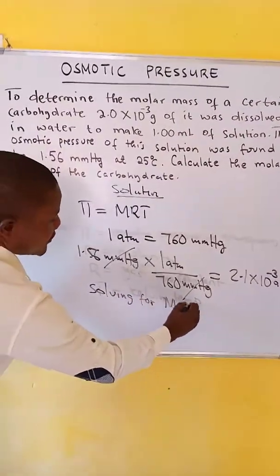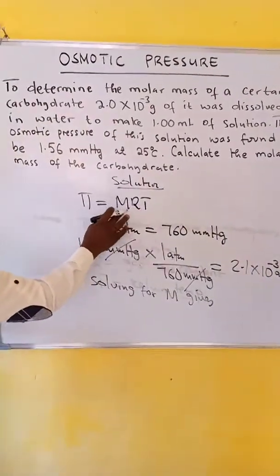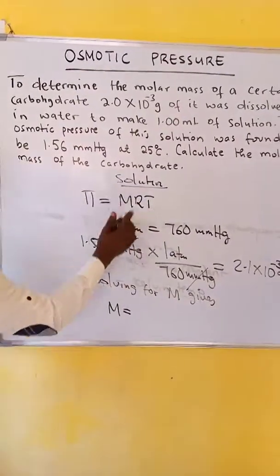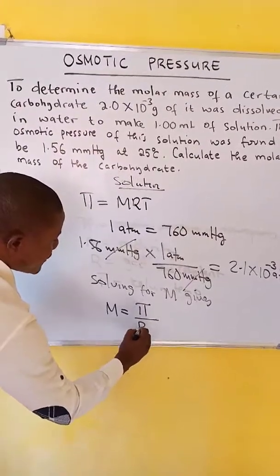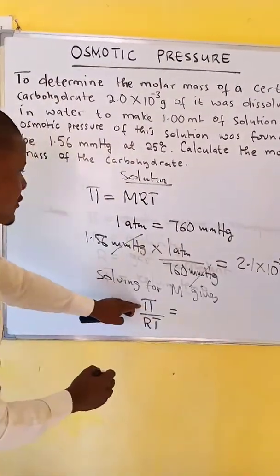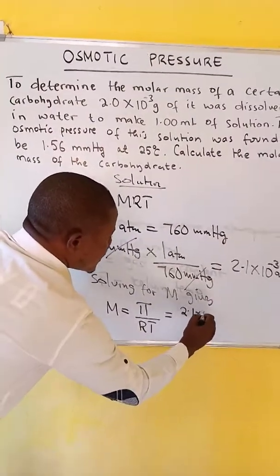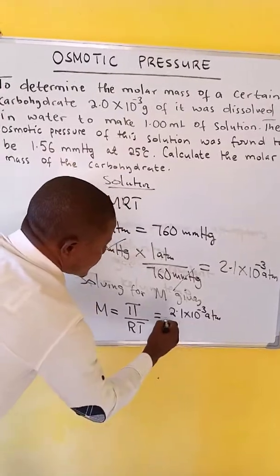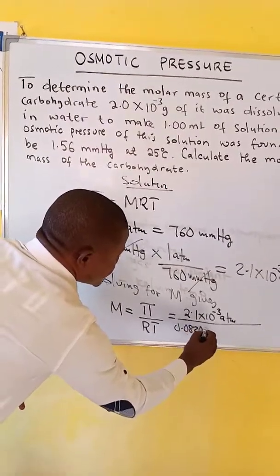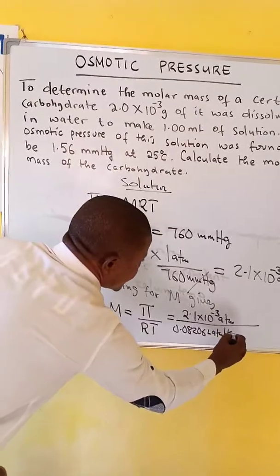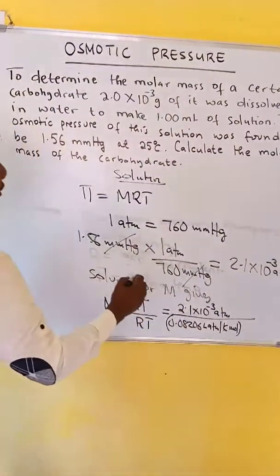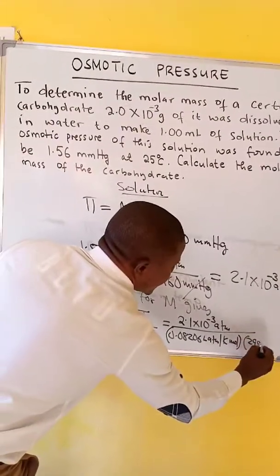Solving for M gives: we make M the subject of the formula so that we calculate the molarity. M is equal to pi over RT, which is equal to our osmotic pressure 2.1 times 10 to the power of negative 3 atmospheres, over R which is 0.08206 liter atmosphere per Kelvin per mole, times T which is 25 degrees Celsius, or 298 Kelvin.